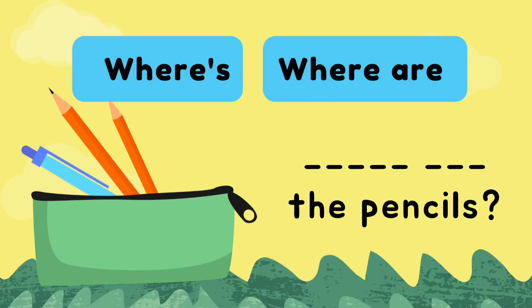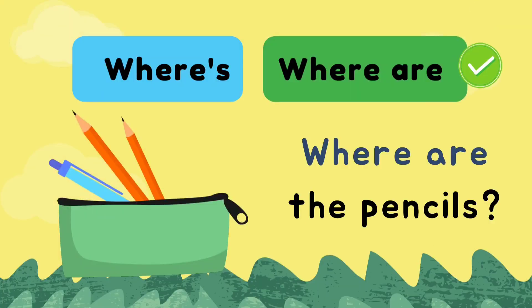Now let's look at the third one. Where's the pencils or where are the pencils? The answer is where are the pencils. We use where are because there are more than one pencil, hence where are the pencils.